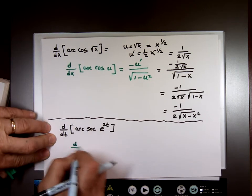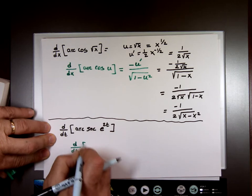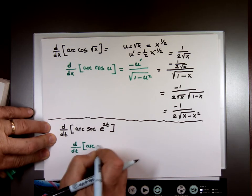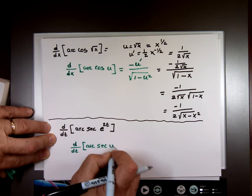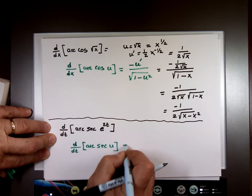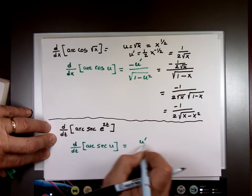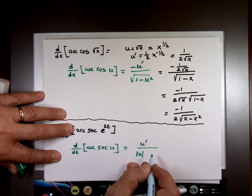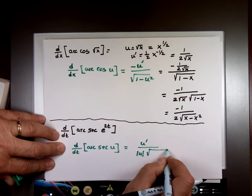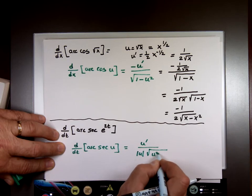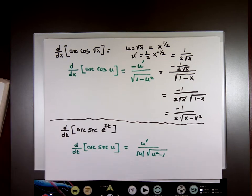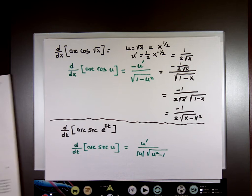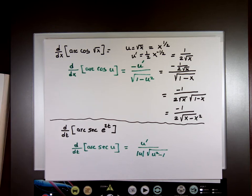The derivative of arc secant u is u prime over absolute value of u times the square root of u squared minus 1. So if I know what u and u prime is, then I'm done.